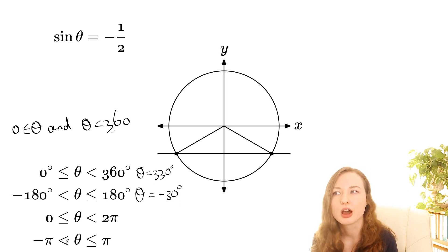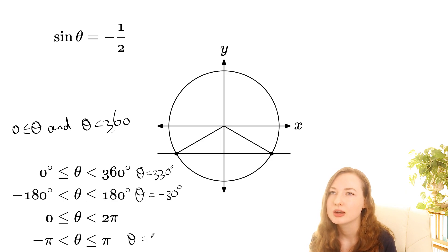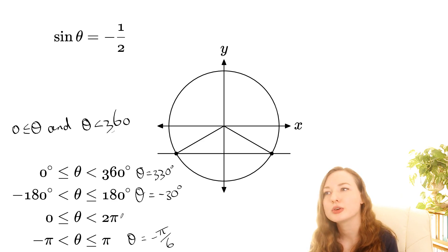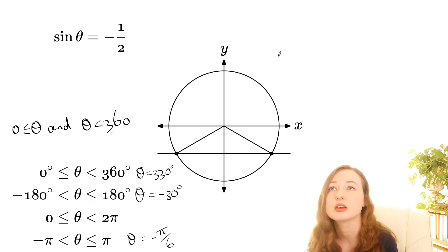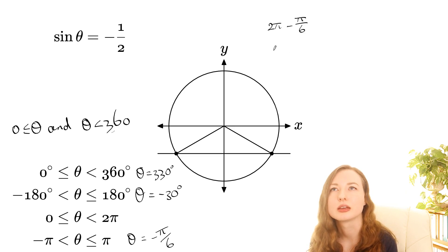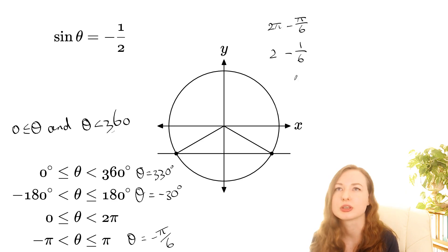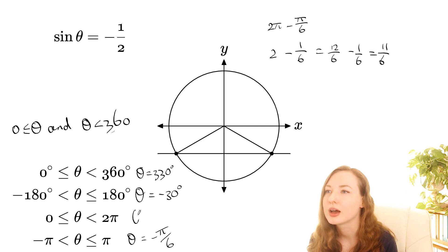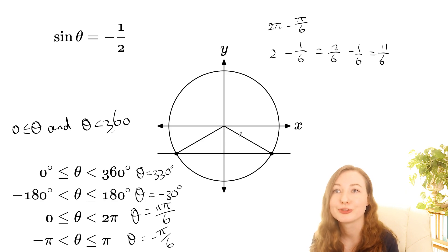If they said negative pi to pi, you would say theta equals negative pi on 6 — remember that's the same as 30 degrees. If they said 0 to 2 pi, you're gonna have to think of it as 2 pi minus pi on 6. You can think of the 2 as 12 on 6, and then that makes 11 on 6, so you can call that 11 pi on 6. That's all the different ways of expressing that one.